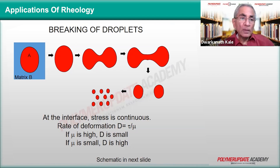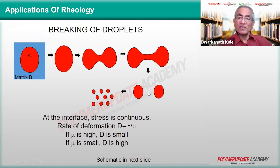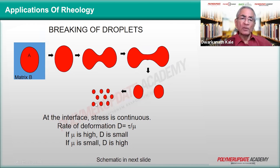Breaking of the droplets is useful in many ways. As we can see, matrix A gets elongated and eventually it will break. If this material is elastic, you need sufficient force to overcome the elastic force before it breaks. Once it is broken, each fragment goes through the same process until it becomes a number of droplets.